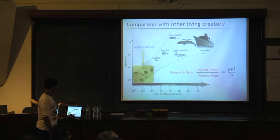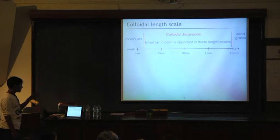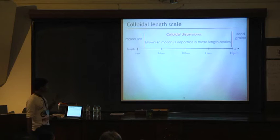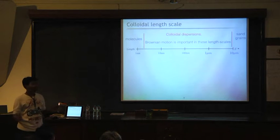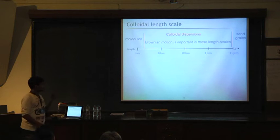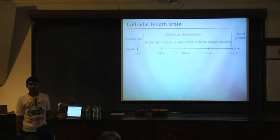Let's see the length scale we will be talking about. The molecule length scale is of nanometers and the atomic is even less. If you go along, we will see that there is a range of few tens of nanometers to tens of micrometers. That is the range where colloidal dispersion is happening.